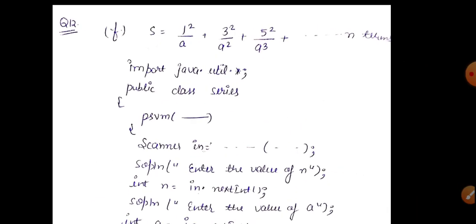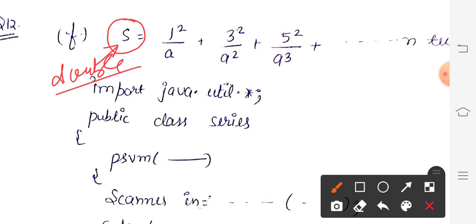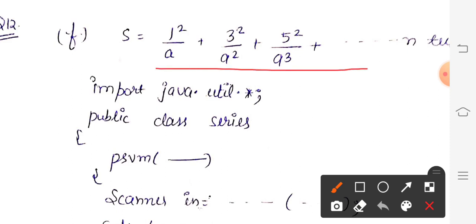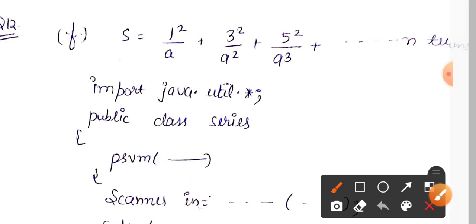Next: question number 12, part F. Look at the series and identify the pattern. The series is in fraction form — p upon q — so the sum will be of double type, remember that. Look at the denominator: a, a², a³ — that is a to the power 1, a to the power 2, a to the power 3. The next value is a⁴, then a⁵. So powers are going up by 1 each time, up to n terms.